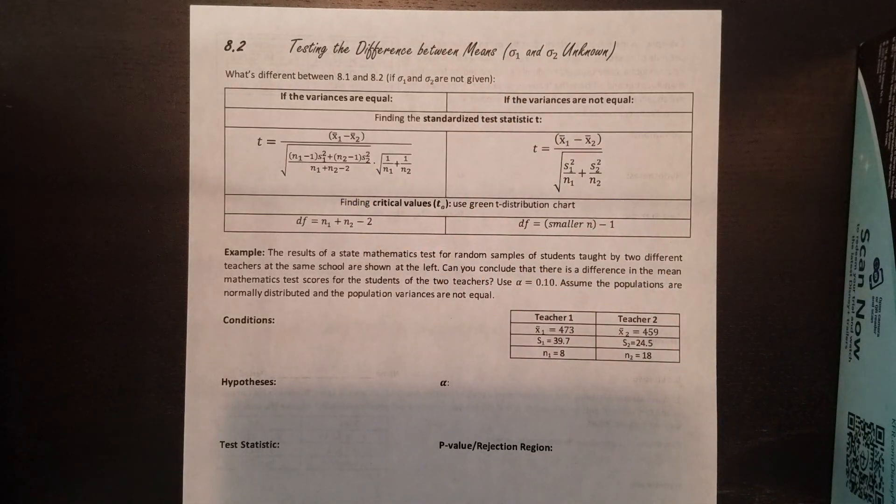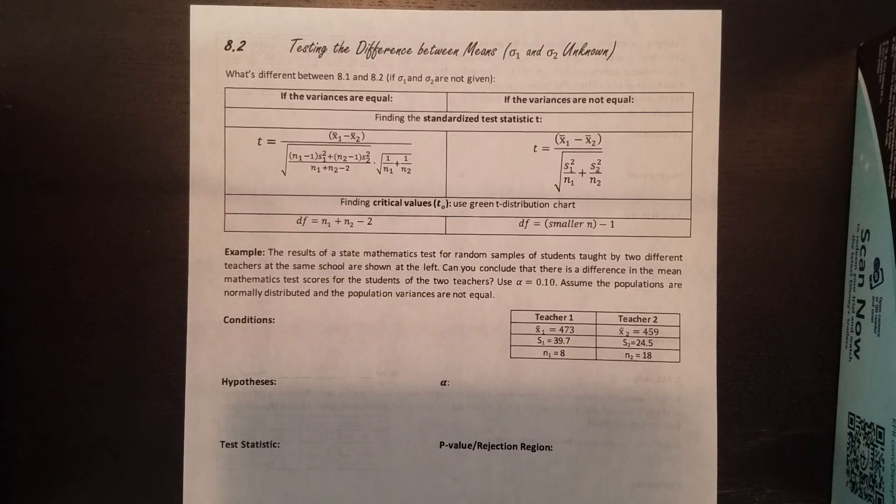We don't know the population standard deviation, which means you're only going to be given the sample standard deviation. Remember all the other chapters where we keep having to decide what kind of standard deviation am I given? Is it from a population or is it from a sample? That's what you're deciding between for section one and section two. In section two, when you're not given the population standard deviation and you're only given the sample standard deviation, the formulas are much more intense.